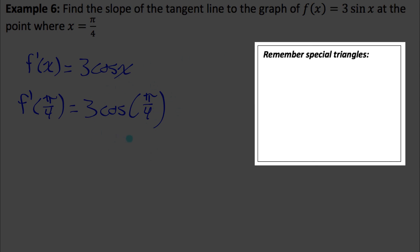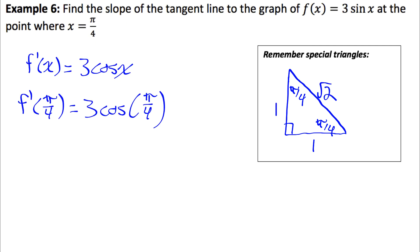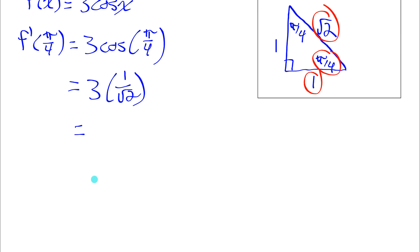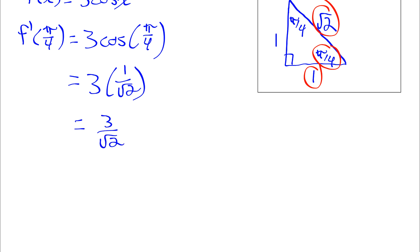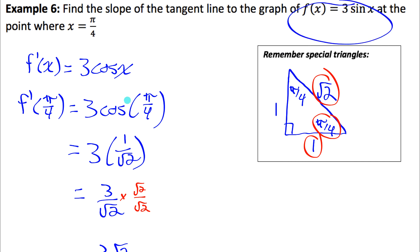Pi over 4 is a special angle. Using the isosceles special triangle with angles pi over 4, pi over 4, and side lengths 1, 1, root 2, cosine of pi over 4 equals adjacent over hypotenuse, which is 1 over root 2. So f prime at pi over 4 equals 3 times 1 over root 2, which is 3 over root 2. Rationalizing the denominator by multiplying by root 2 over root 2 gives 3 root 2 over 2. That's the slope of the original function at x equals pi over 4.